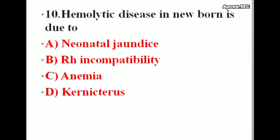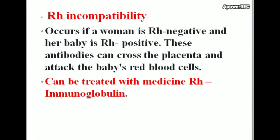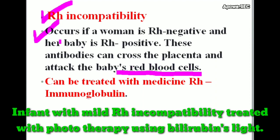Last question: Hemolytic disease in the newborn is due to — options: neonatal jaundice, RH incompatibility, anemia, kernicterus. Correct answer is RH incompatibility. RH incompatibility occurs if a woman is RH negative and her baby is RH positive — these antibodies can cross the placenta and attack the baby's red blood cells. RH incompatibility can be treated with RH immunoglobulin.